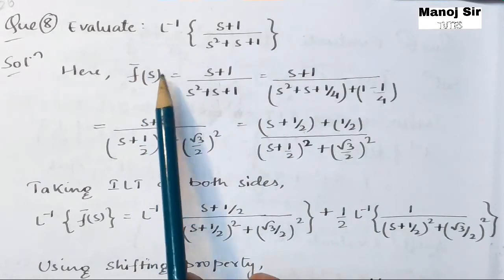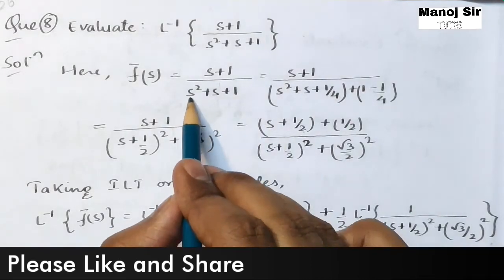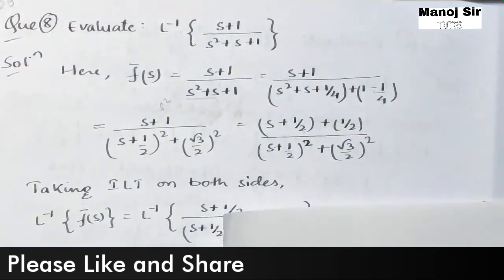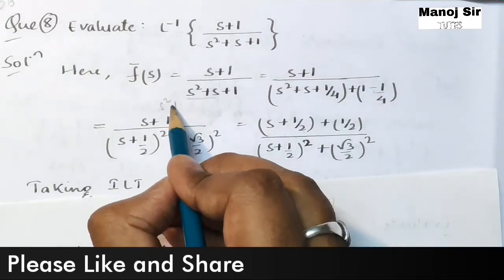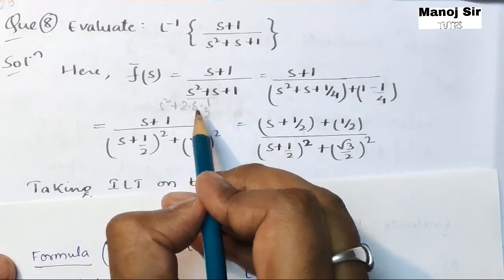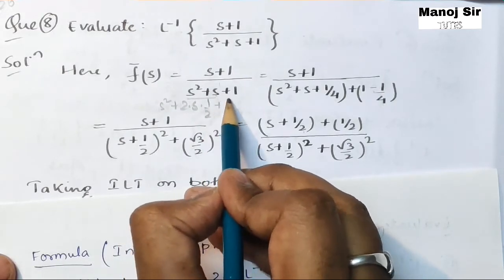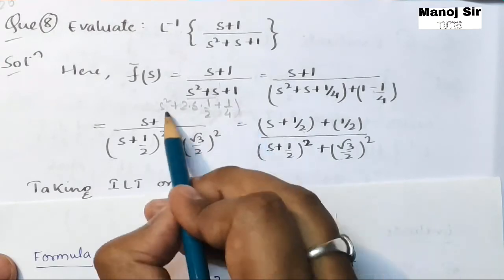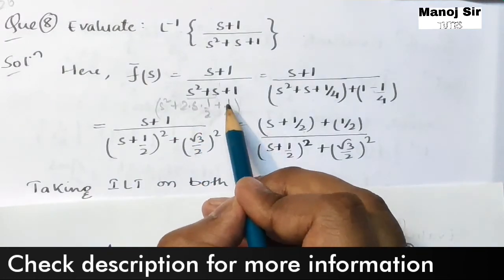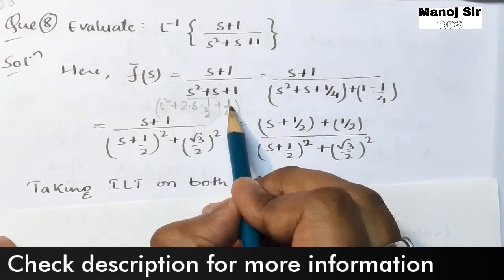If you look at the denominator, we have s² + s + 1. We want to make this a perfect square of the form (a + b)². That is s² + 2·(s)·(1/2) + (1/2)², so we multiply s by 1/2. This gives us (1/2)² = 1/4. So we have 1/4 extra that we need to subtract to keep the equation balanced.